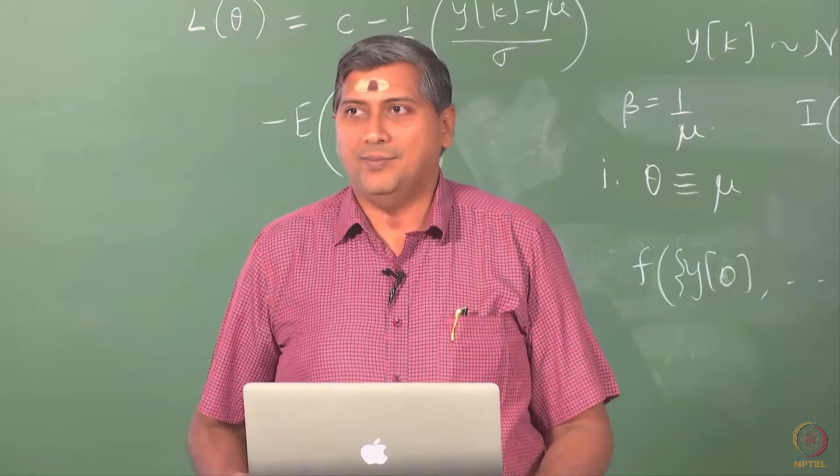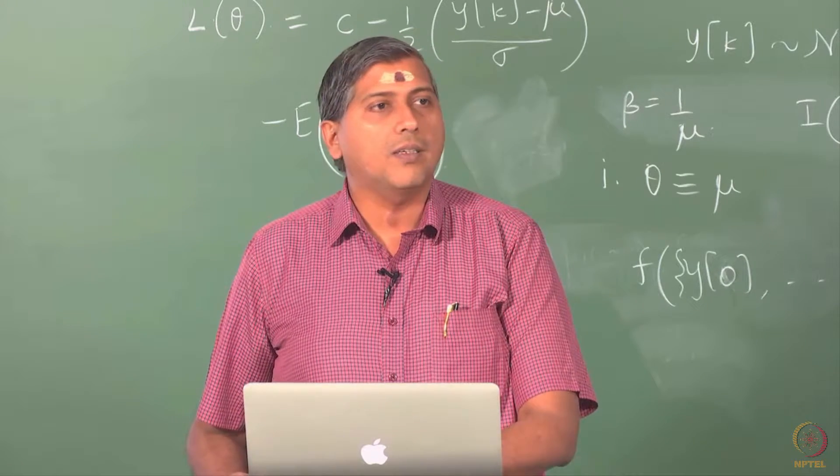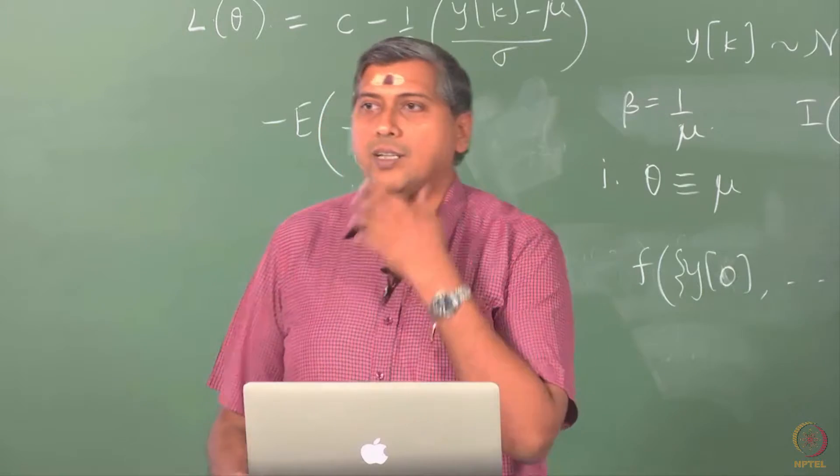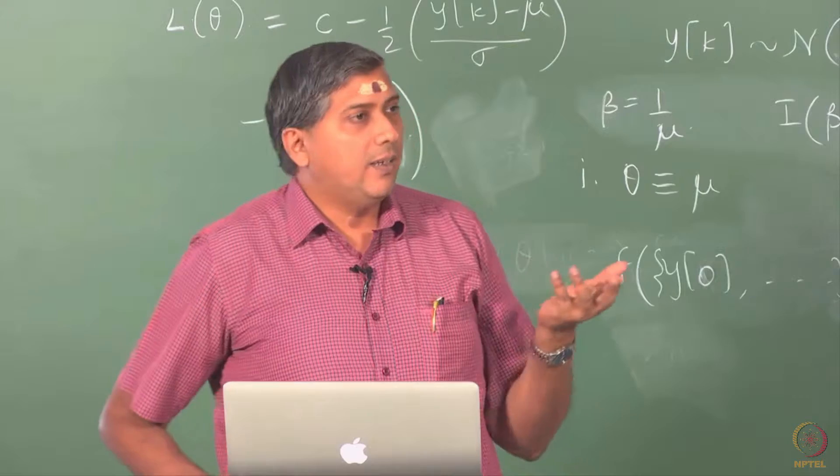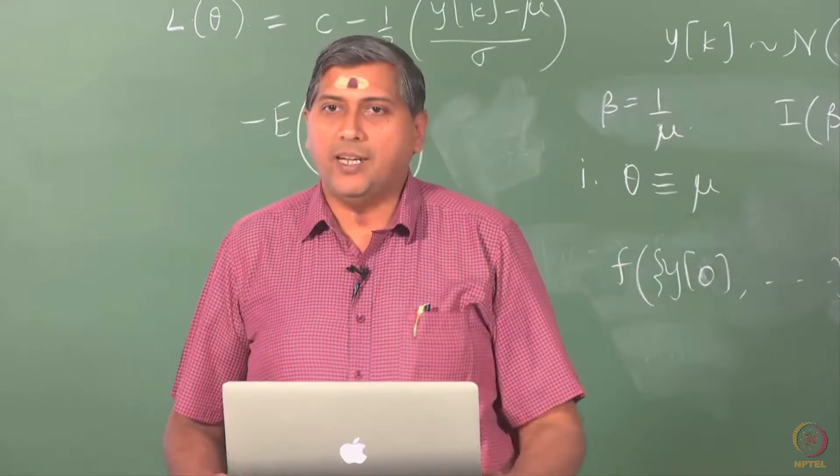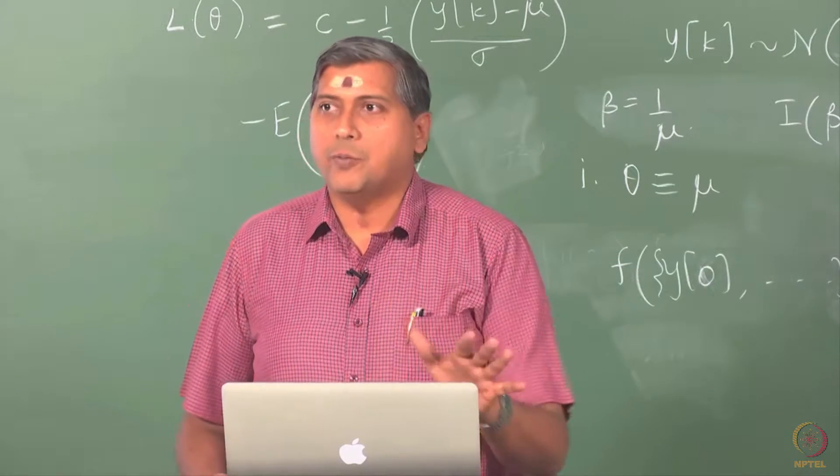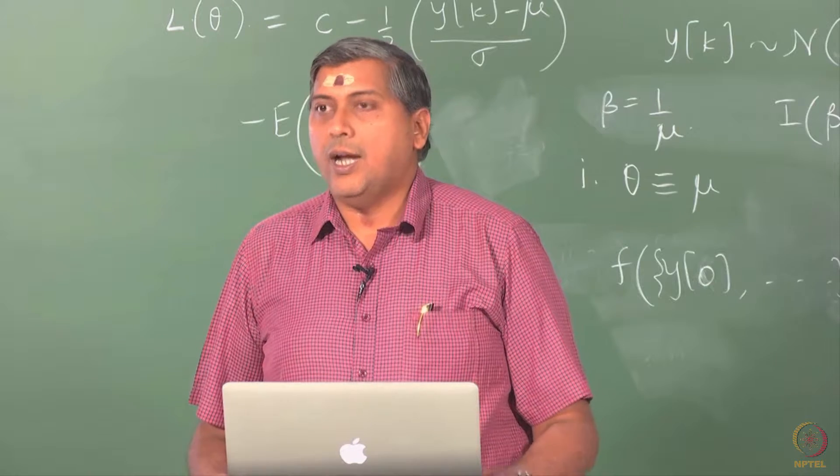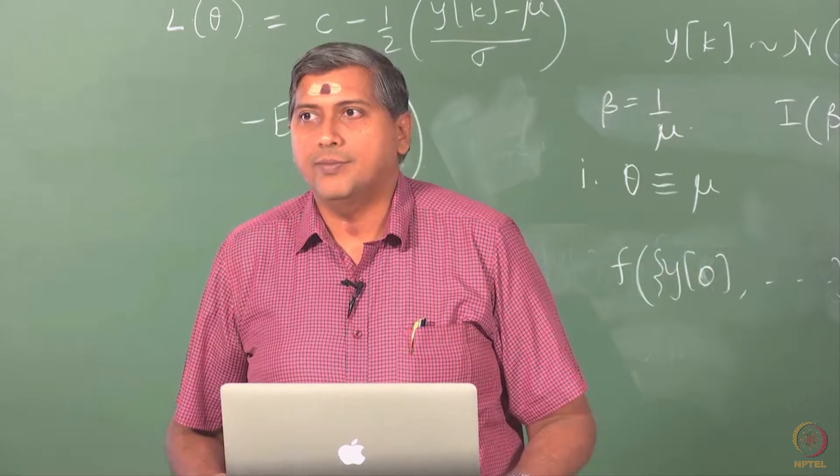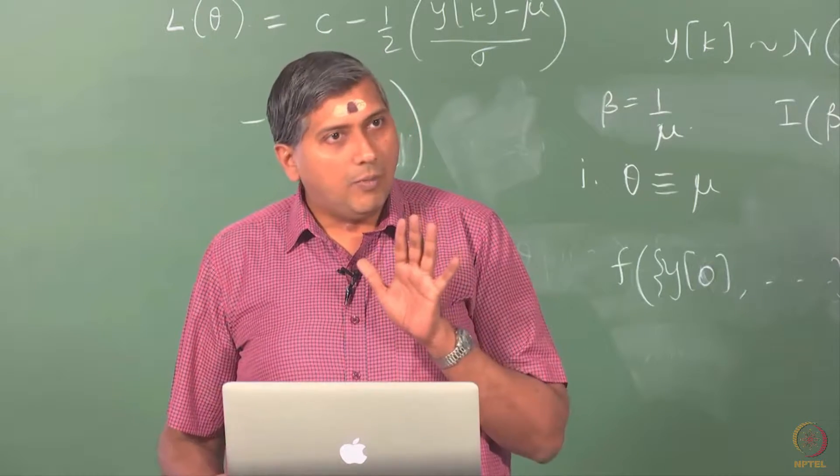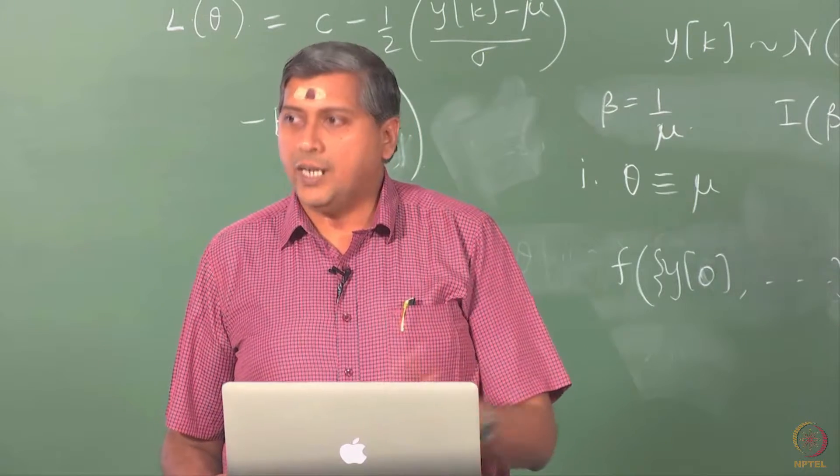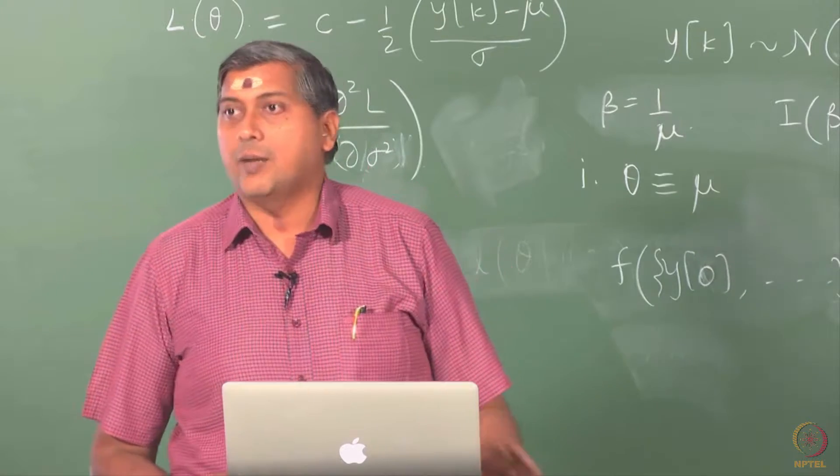All I have to do is evaluate the expectation of ȳ, plug in the expression for ȳ and make an assumption. What assumption do I make here? That yk is stationary. After having assumed that, I can prove that the estimator is unbiased.